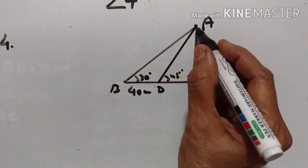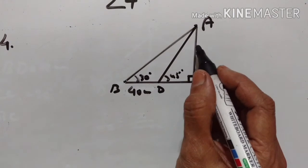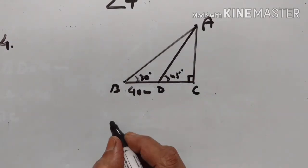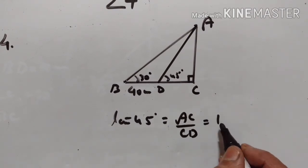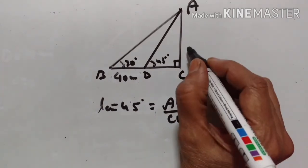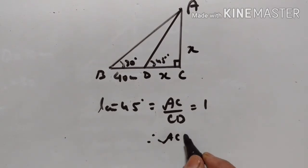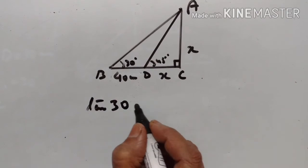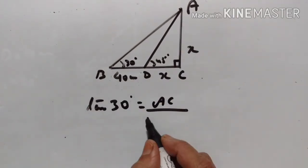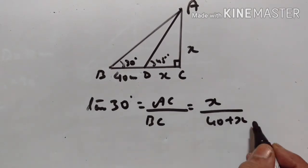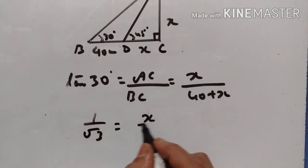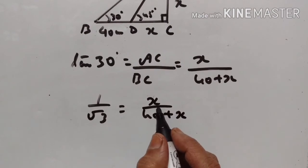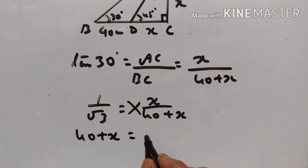Now we have to find the length of AC. Tan 45° equals AC upon CAD. Tan 45° is equal to 1. Therefore AC equals CAD — let them both be X. Now, tan 30° equals AC upon BC. AC is equal to X and BC is equal to 40 plus X. Tan 30° equals 1 upon √3, which equals X upon 40 plus X. Multiplying out: 40 plus X equals √3·X.